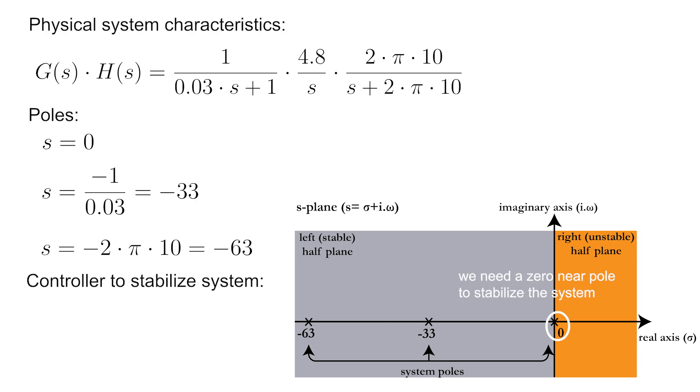Now to stabilize the system, we need to add a zero near the pole. This means the controller has the form of the equation on screen, where B is a zero that you need to place near the pole and K is a constant. We do not yet know where we need to place B exactly, except that it will be near 0 as shown on the screen.